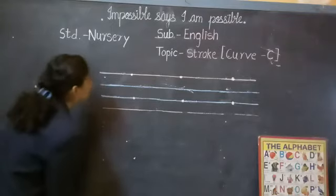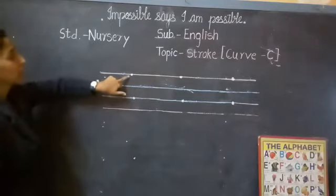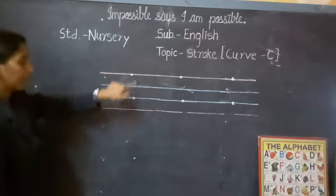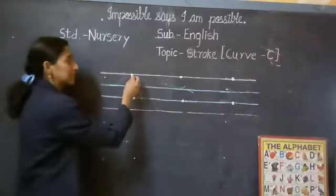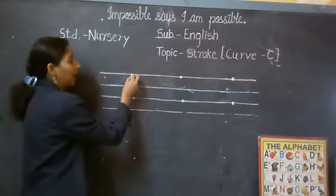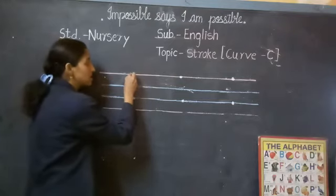Look here. Here are two dots. One dot on red line and one more dot on second blue line. You put your pencil on the red line dot and take a curve.